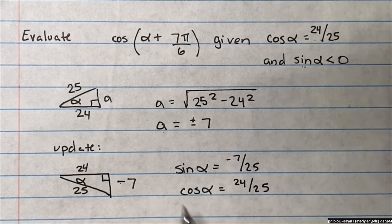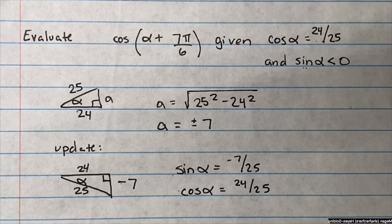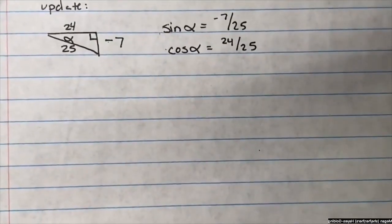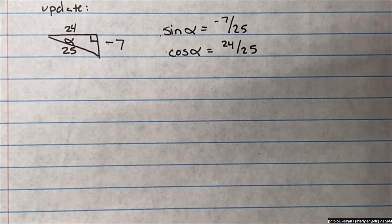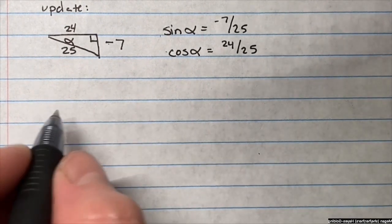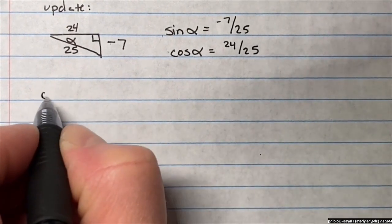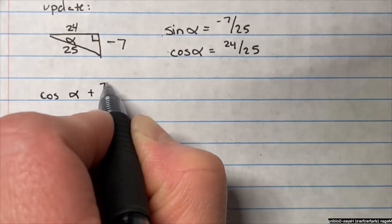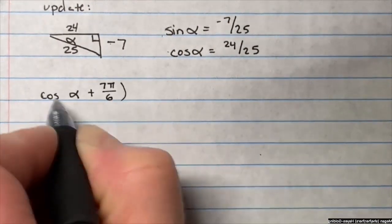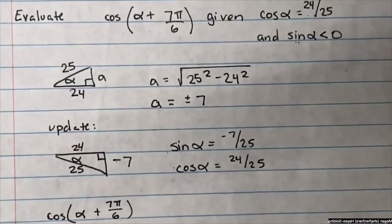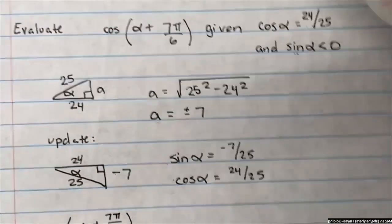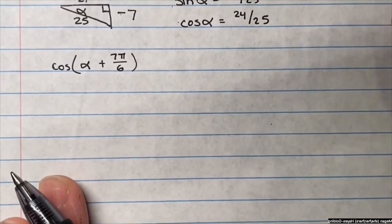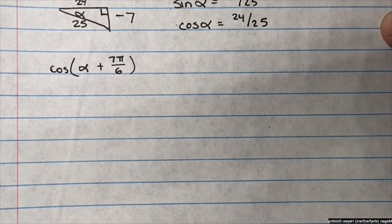I wrote these down because I'm anticipating what my next step is about to be. Here comes what I was anticipating. So I'm going to write down the cosine addition formula for this problem. So cosine of an angle alpha plus 7 pi over 6, which by the way is what the original problem reads is, and I'm working off of the formula for addition of cosines.